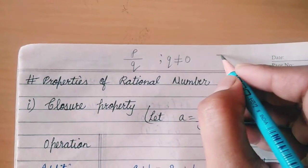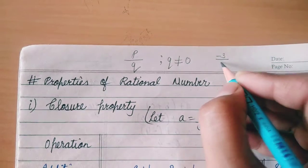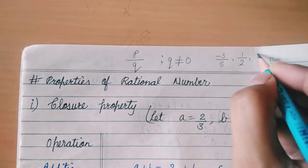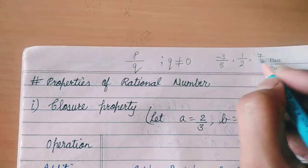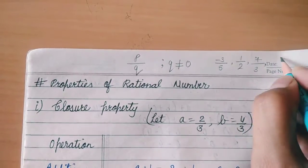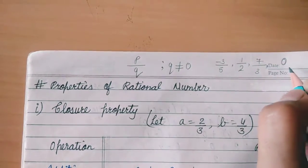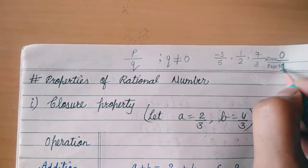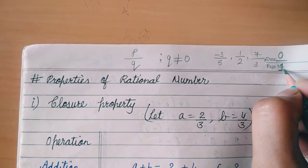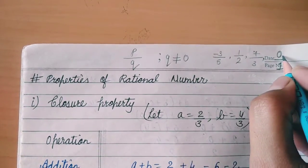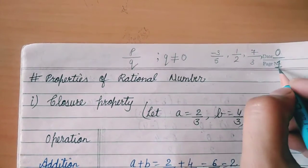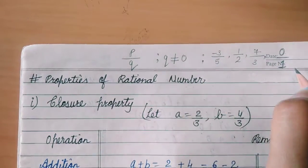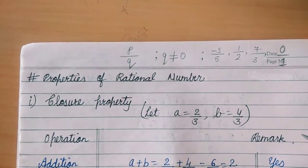For example, minus 3 by 5, 1 upon 2, 7 upon 3. 0 is also a rational number because it has a denominator of 1 — its numerator is 0 but denominator is 1. So they all are rational numbers examples.